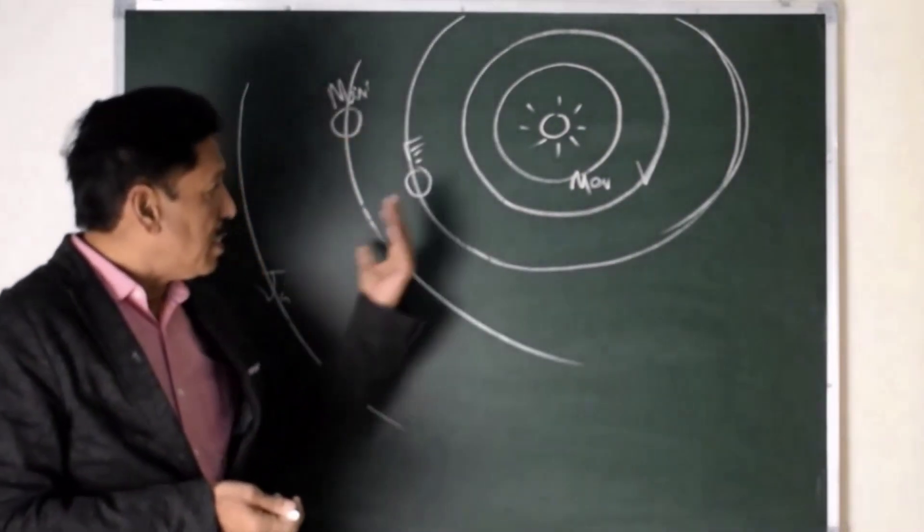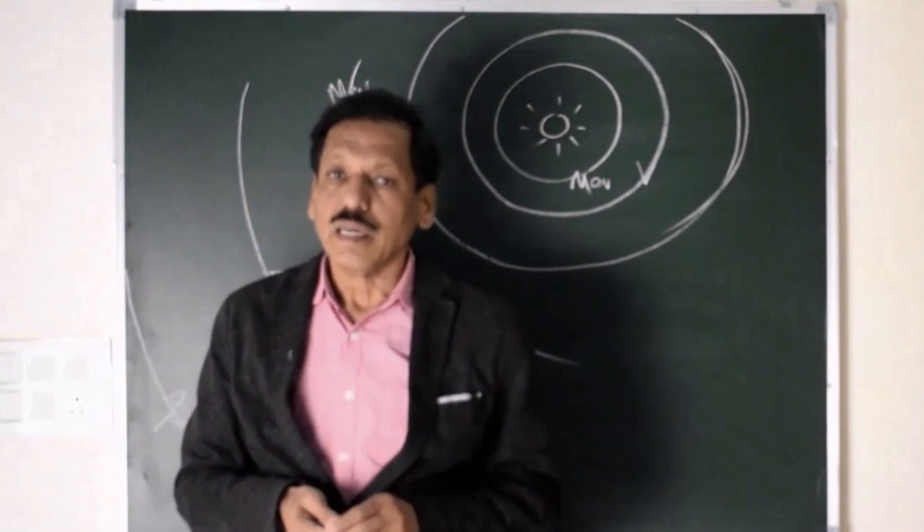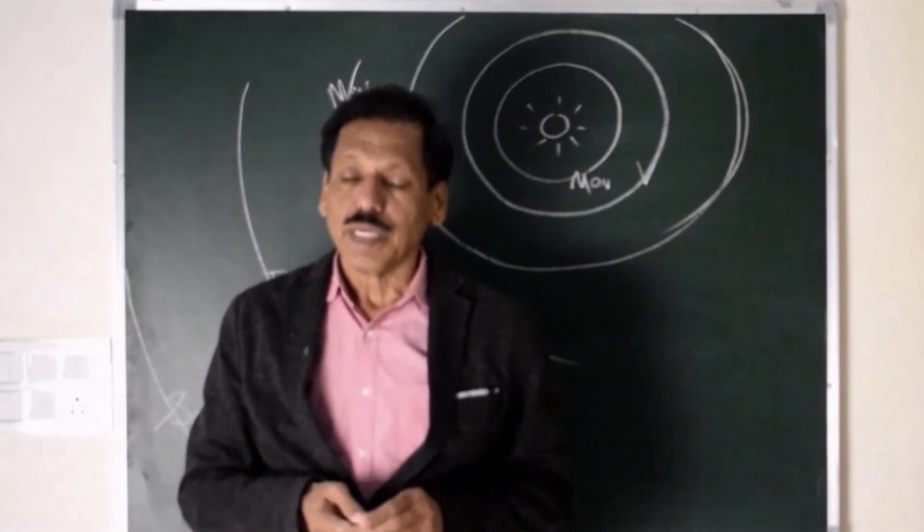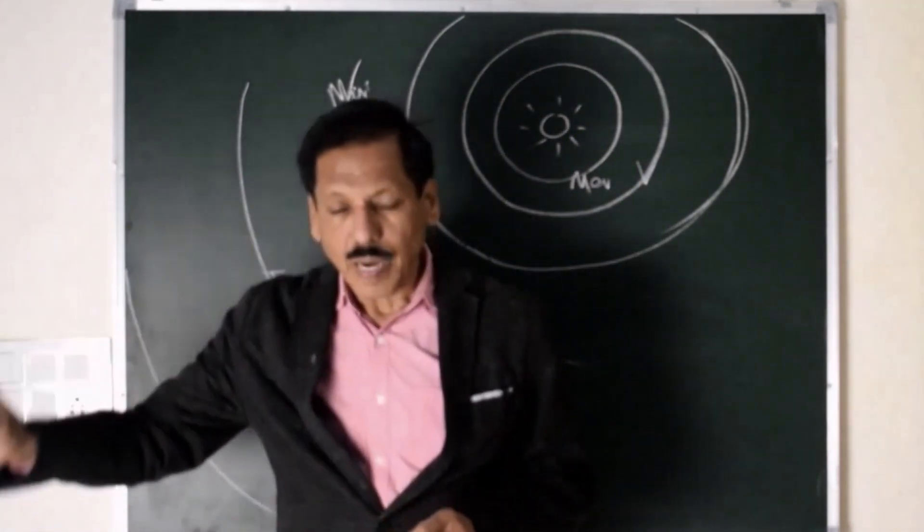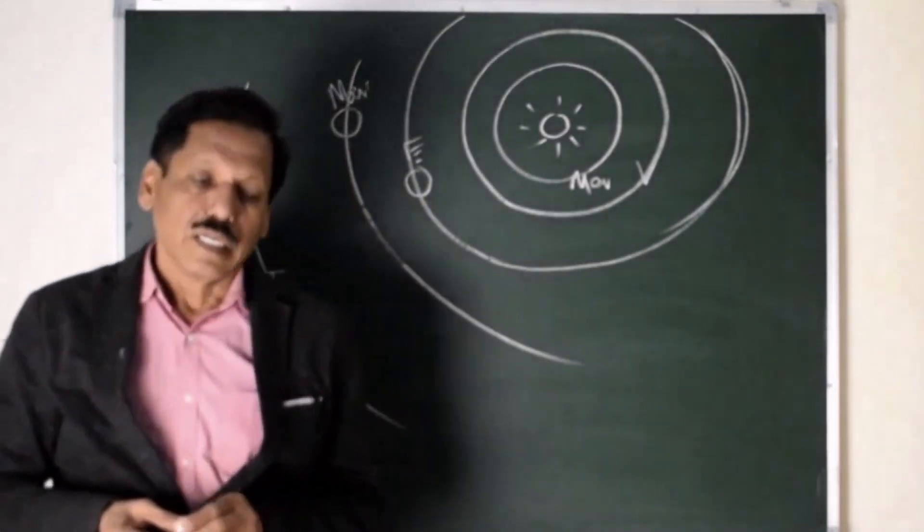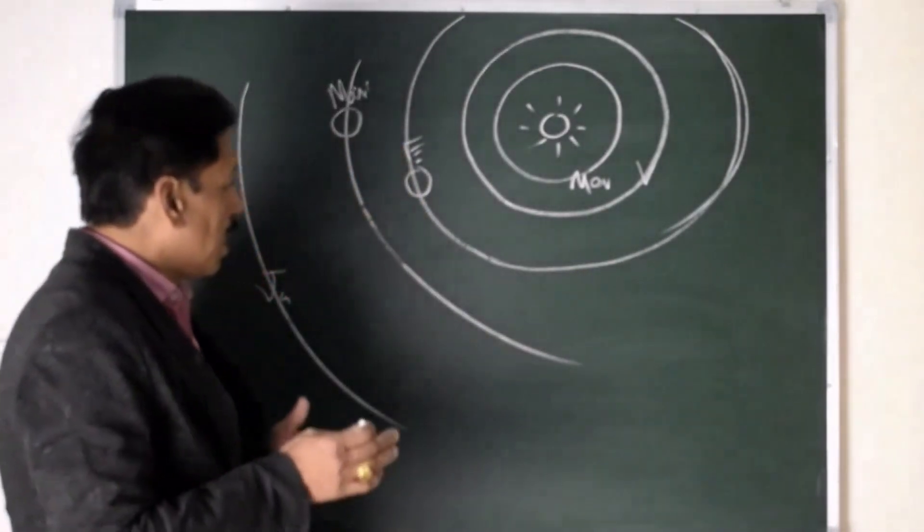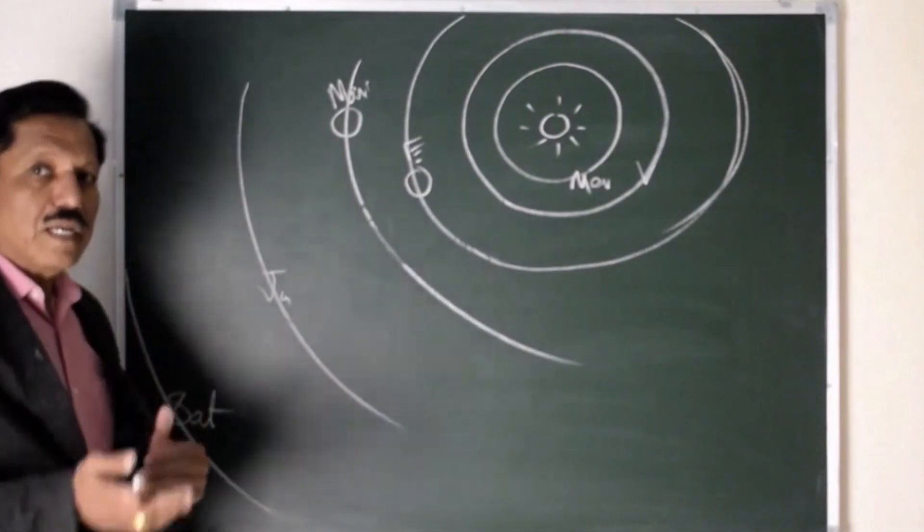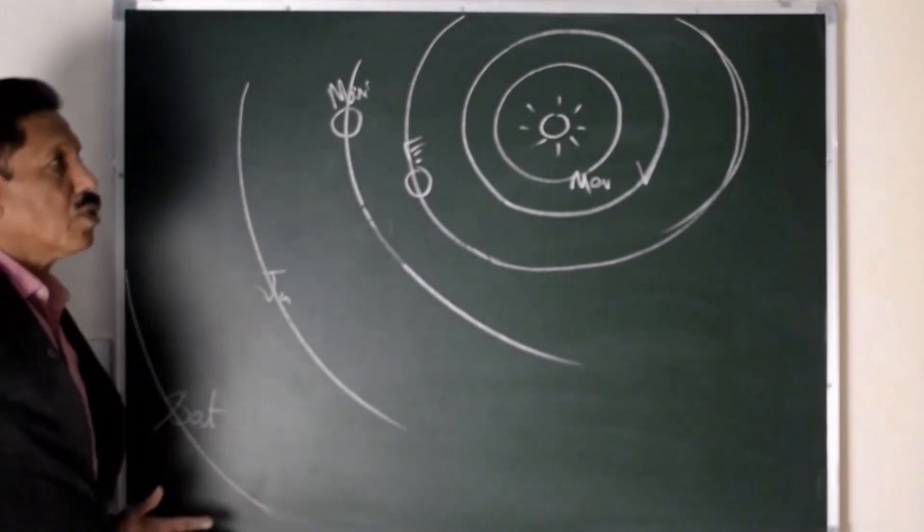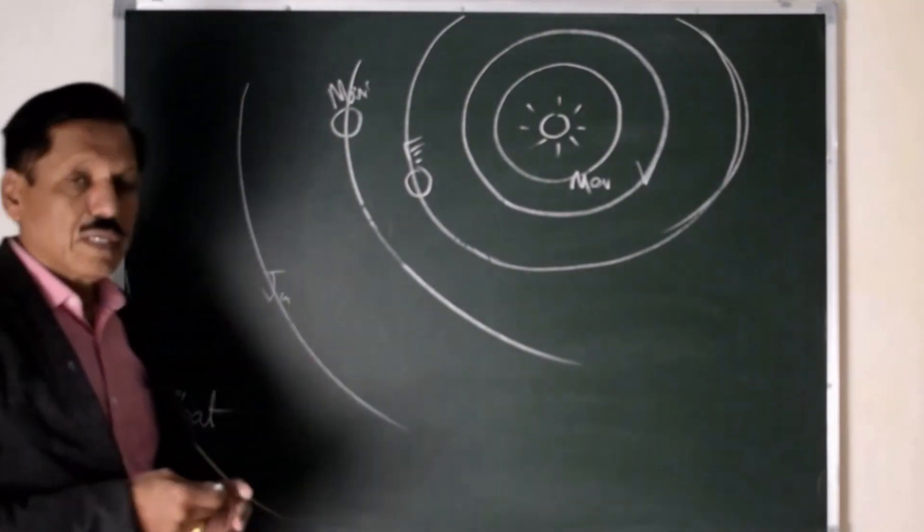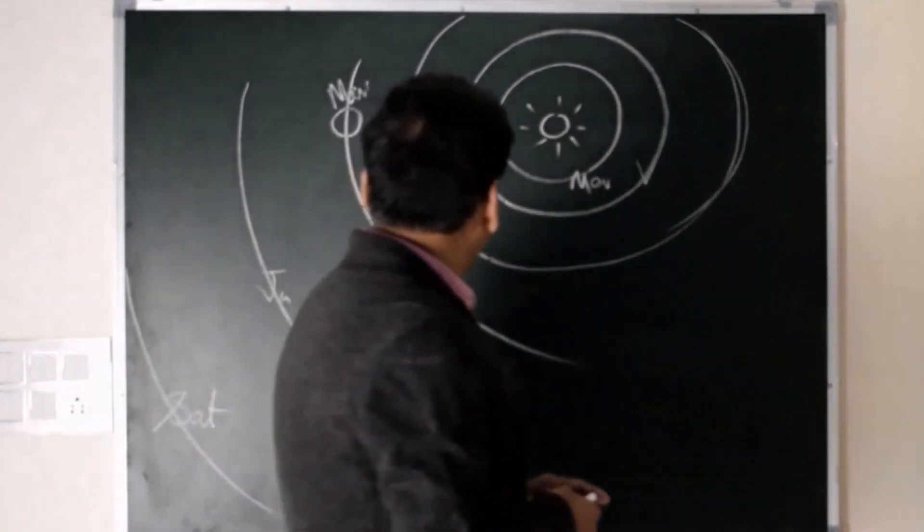Now, the distances and sidereal periods. Sidereal period means how much time a planet would go around the Sun in space by 360 degrees. That period, sidereal period, and the distance to Sun is related by Kepler's third law.